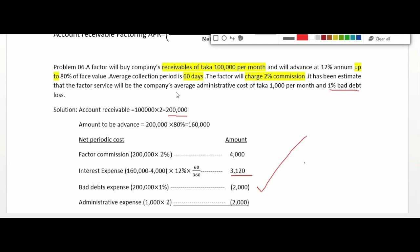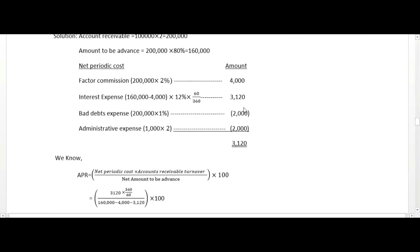Administrative expense savings of 1,000 per month. Factor commission was 4,000. Interest expense is calculated separately. Bad debt expense and administrative expense must also be included in the net periodic cost calculation.